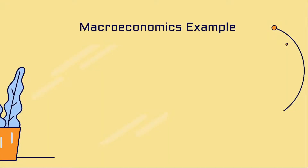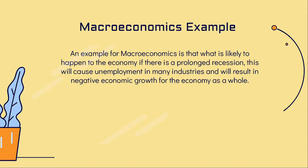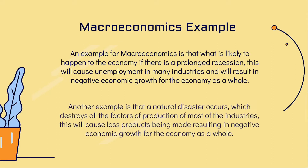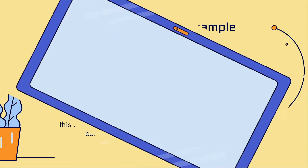Some examples are what is likely to happen to the economy if there is a prolonged recession. This will cause unemployment in many industries and will result in negative economic growth for the economy as a whole. Another example is that a natural disaster occurs, which destroys all the factors of production of most industries. This will cause fewer products being made, resulting in negative economic growth for the economy as a whole.